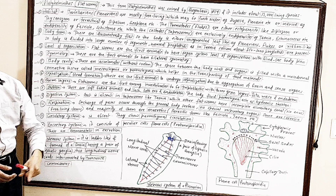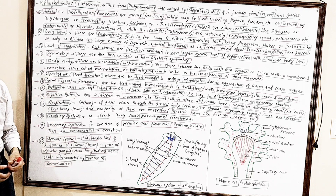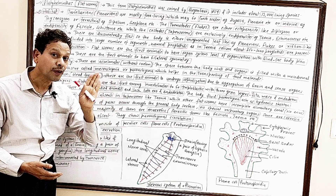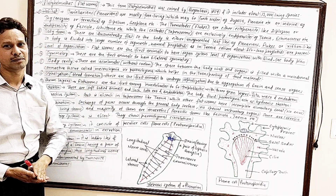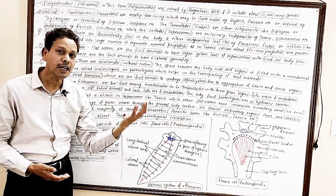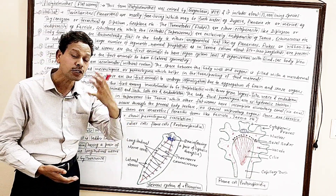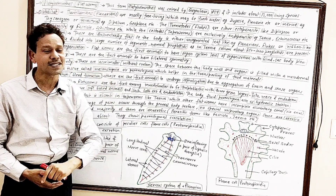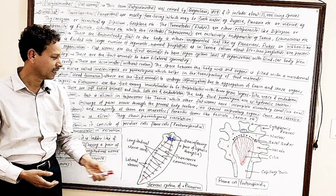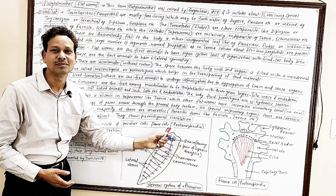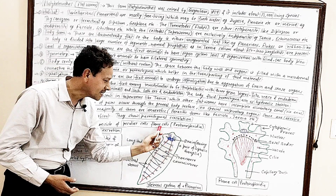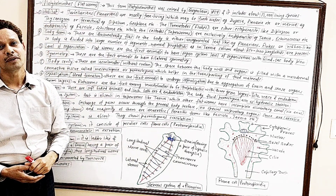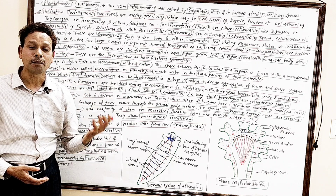Cephalization: for the first time in this phylum, cephalization occurs, meaning the anterior part of the body gets organized into a head. That head consists of an aggregation of sense organs and brain.